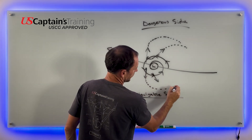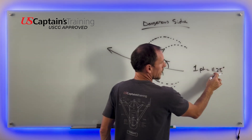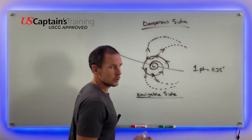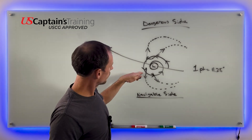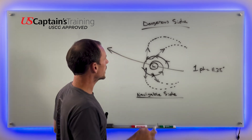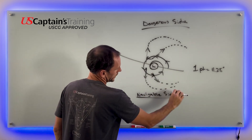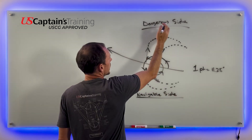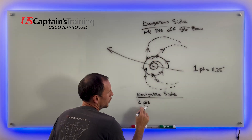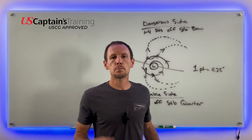How far is a point? One point equals 11.25 degrees, so four points equals 45 degrees, two points is 22.5 degrees, and one to four points is 11.25 to 45 degrees off the wind. On the dangerous side, put your starboard bow and head away. On the navigable side, put your starboard quarter and head away. As the low passes, it'll curve — dangerous side: one to four points off starboard bow; navigable side: two points off starboard quarter. That's how you avoid the center of a low pressure system.